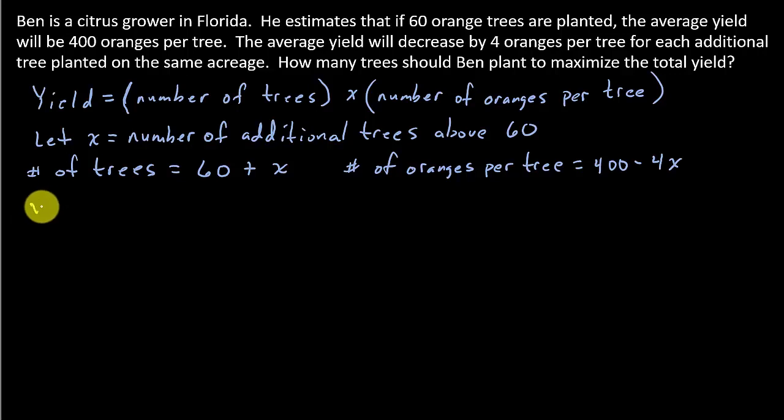So now we're ready to go ahead and solve our problem. We'll just call this y, the yield, is equal to the number of trees, which is 60 plus x, times the number of oranges per tree, which is 400 minus 4x.